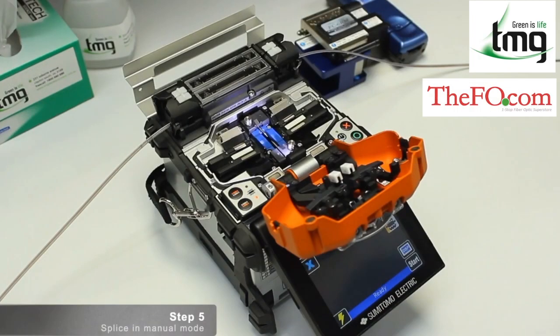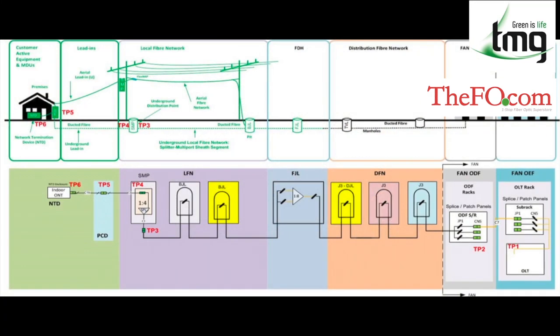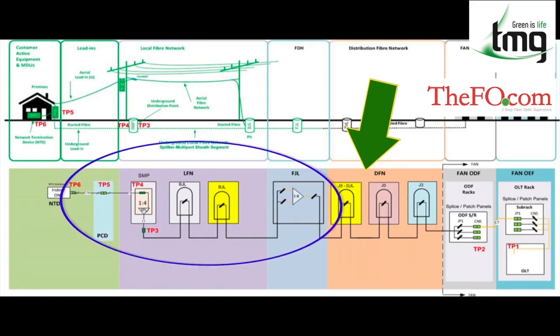In my last fusion splicer training video I demonstrated how to use the 71M ribbon splicer. This splicer is great for working on the distribution fiber network like the DJL. It can also be used for the local fiber network for the deribbonized fiber at the FJL and BJL.